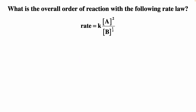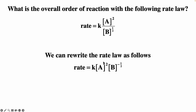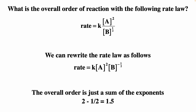What is the overall order of the reaction for the following rate? If B is in the denominator, it's the same as B to the minus one-half power. Adding the exponents: 2 minus one-half gives 1.5. So you can have the order of the reaction relative to a specific reactant, and also the overall order, which is the sum of those exponents.